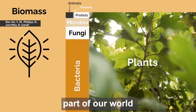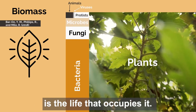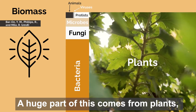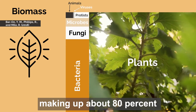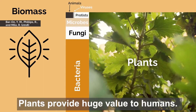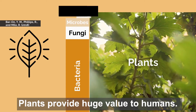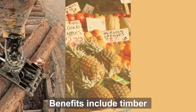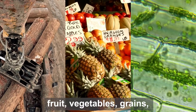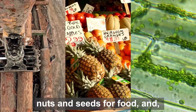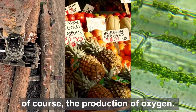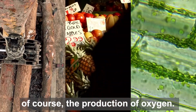Arguably, the most important part of our world is the life that occupies it. A huge part of this comes from plants, making up about 80% of all life by mass. Plants provide huge value to humans. Benefits include timber and fuel from trees, fruit, vegetables, grains, nuts and seeds for food and, of course, the production of oxygen.